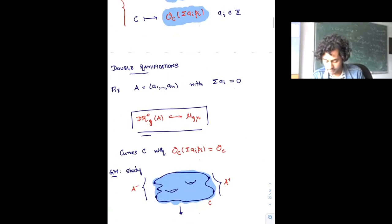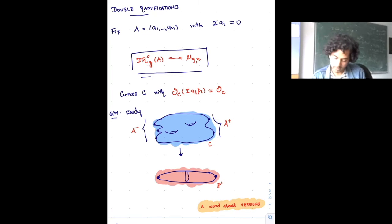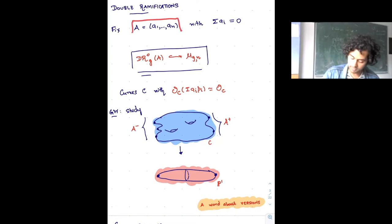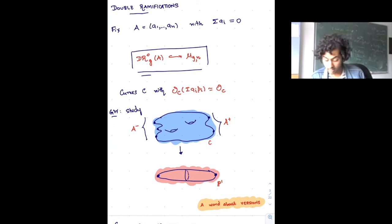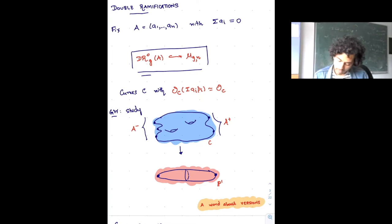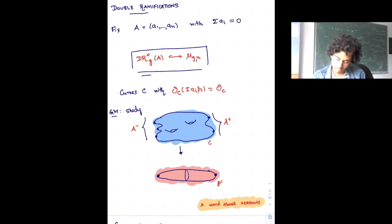The double ramification cycle — the heart of what I'll be discussing — comes from asking to what extent these two constructions overlap. To be more precise: I'll fix a vector a_1 up to a_n of integers whose sum is zero. The double ramification cycle DR_{g}(a) is the set of curves such that the line bundle Σ a_i p_i specified by these n integers is trivial — it's a condition on points in M_{g,n} that this line bundle is actually the trivial line bundle.